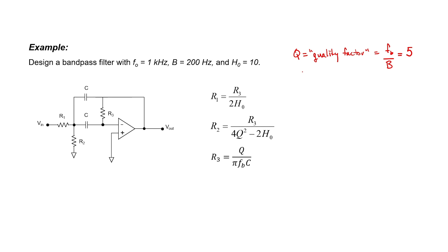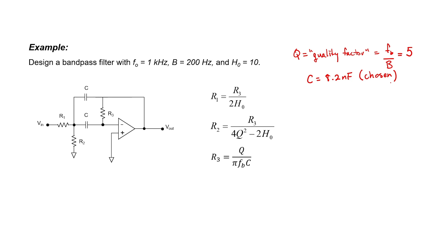As the center frequency for this filter lies in the medium audio range, we can choose a mid-value capacitance. I've chosen 8.2 nF. It turns out that this yields resistors that are in the kilohm range. We now have enough information to find the three resistors. Since we know Q, C, and F sub B, we can now calculate a value for R sub 3. It turns out that this will be 194 kilohms.